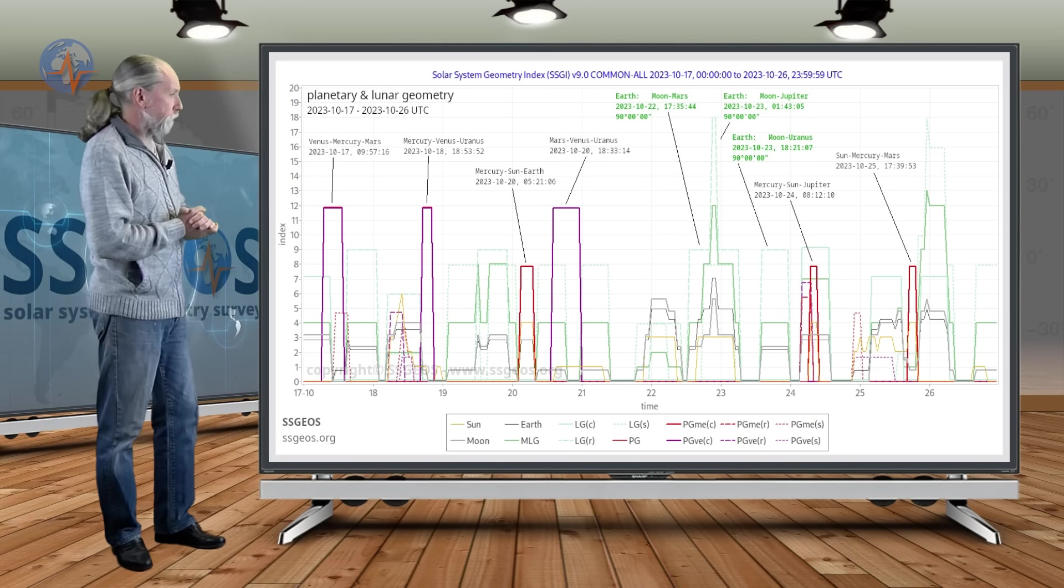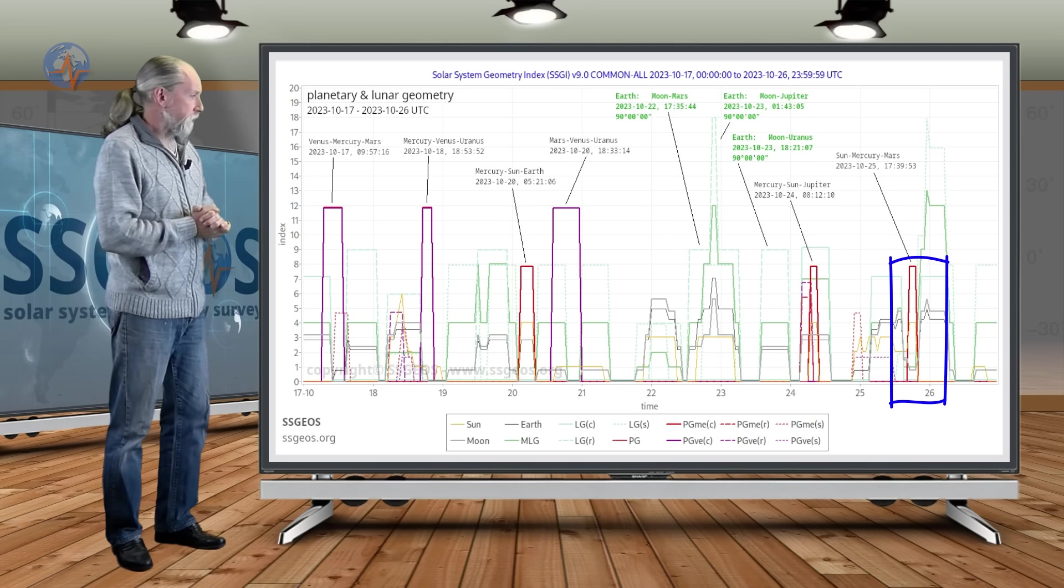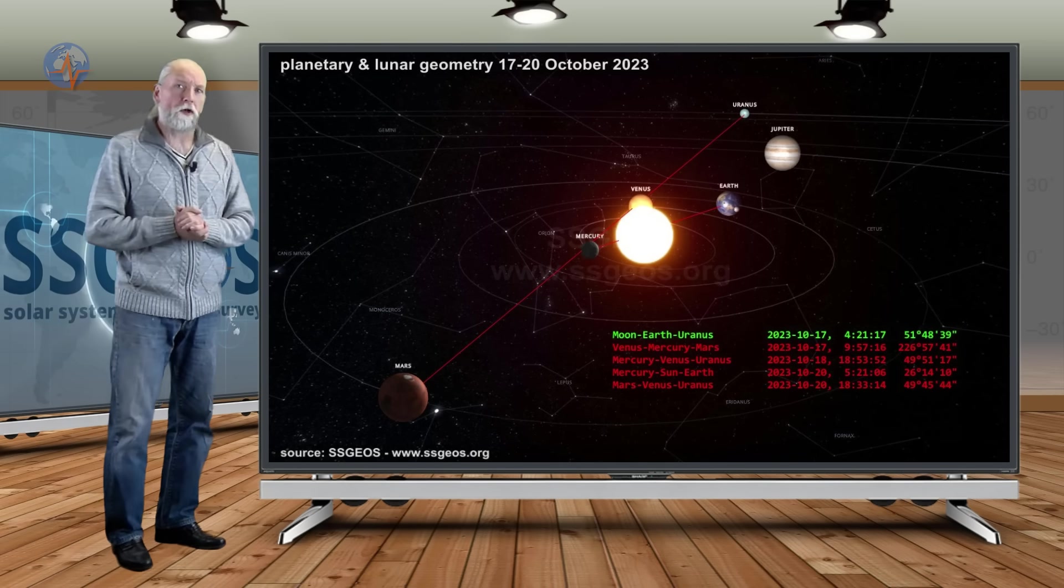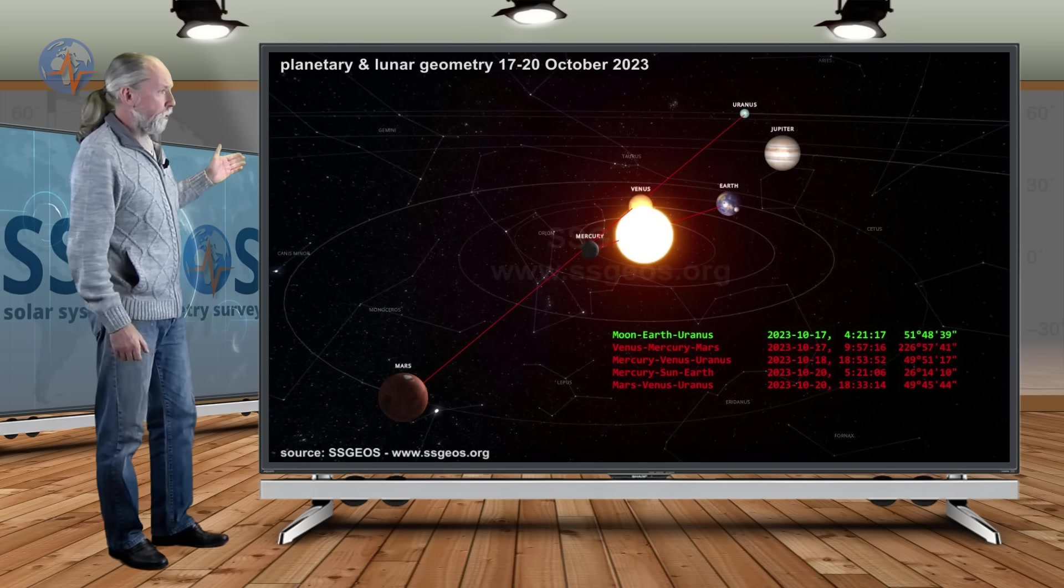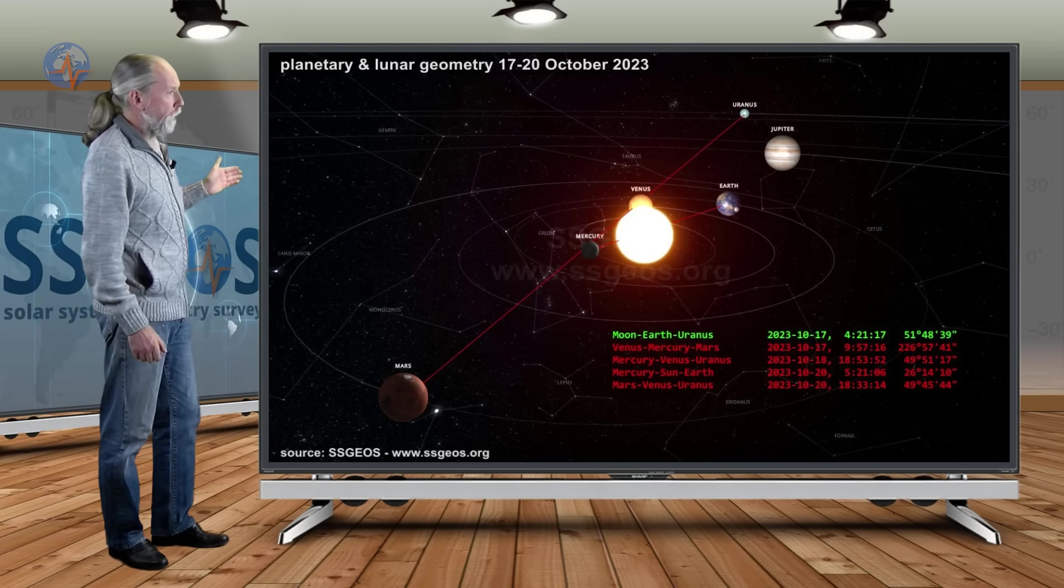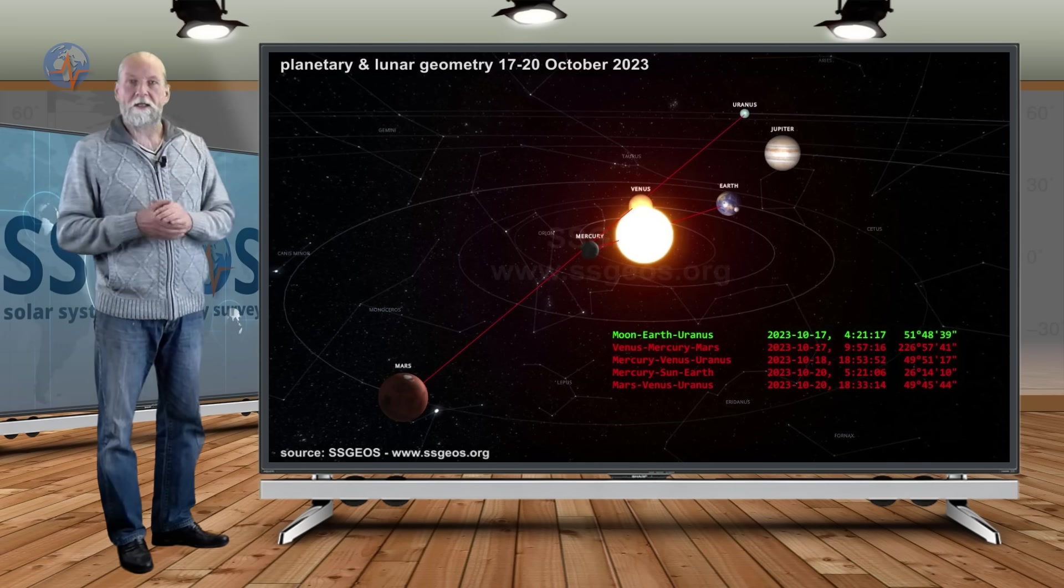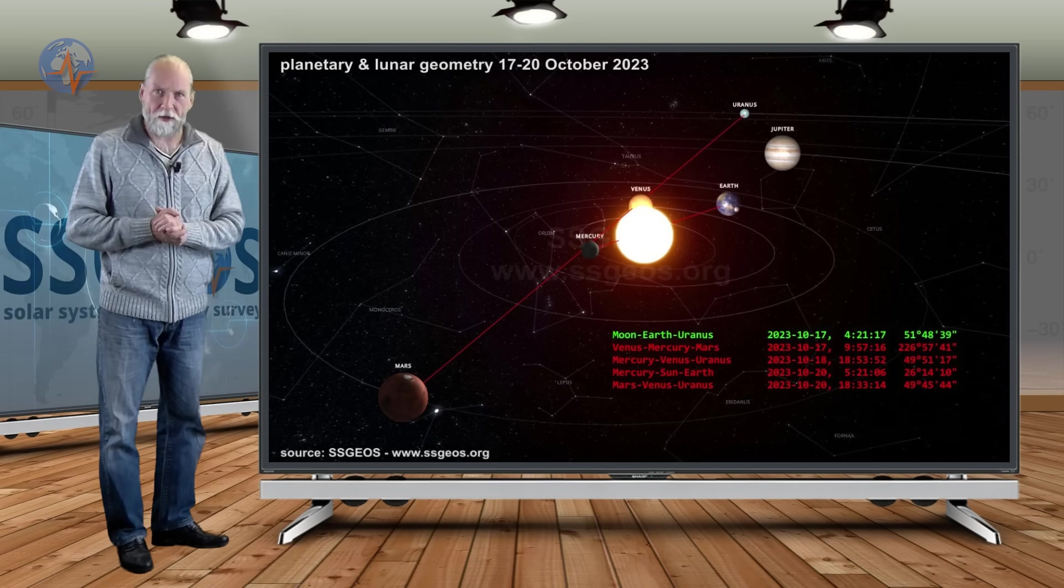And then we have planetary geometry also with Mercury and Jupiter on the 24th, and also on the 25th Sun, Mercury, and Mars. If we take a quick look at the solar system, we see almost a quadruple conjunction with Mars, Mercury, Venus, and Uranus, but that's not the case. Like I said, we have the planetary conjunctions spread out over four days.